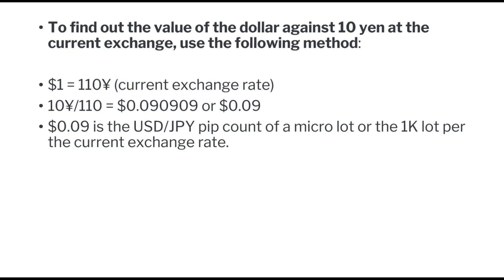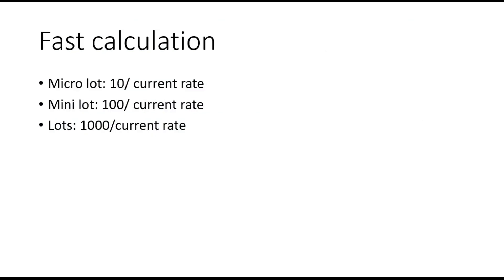That method is very simple. For 10 yen, divide by the exchange rate and you get the pip value of a micro lot for a 1k lot at the current exchange rate. The fast calculation formula for pip value in dollars is: for a micro lot, divide 10 by the current rate; for a mini lot, divide 100 by the current rate; and for a standard lot, divide 1000 by the current rate. These numbers — 10, 100, and 1000 — come from multiplying 1000 by the lot size. For example, 1000 × 0.01 (micro lot) = 10, and 1000 × 1 (standard lot) = 1000.